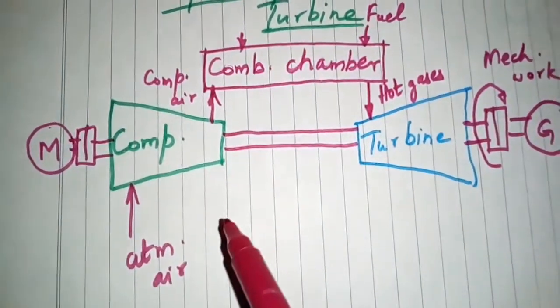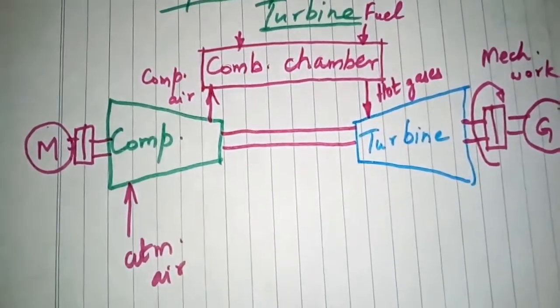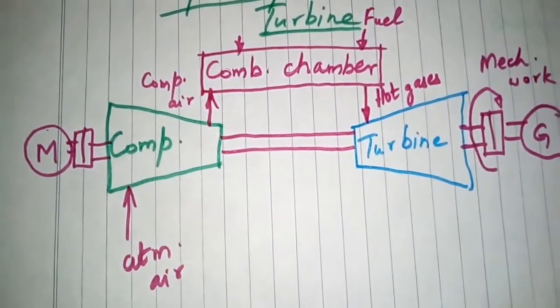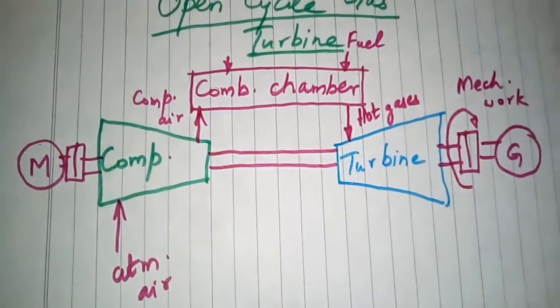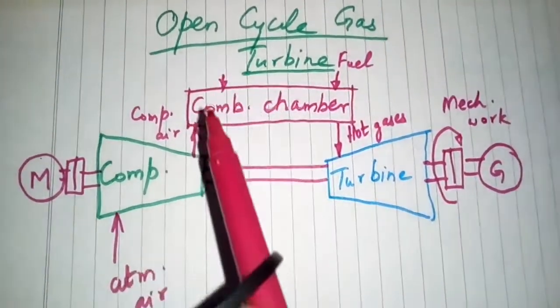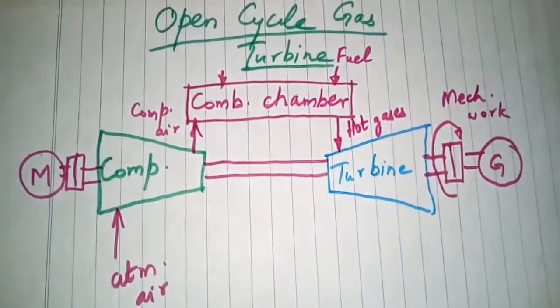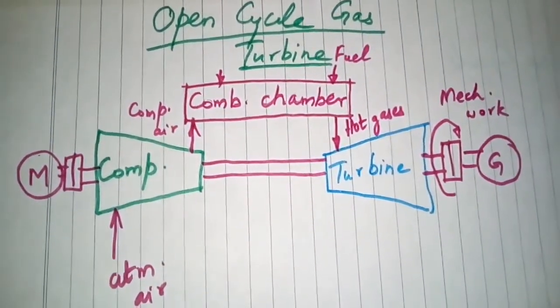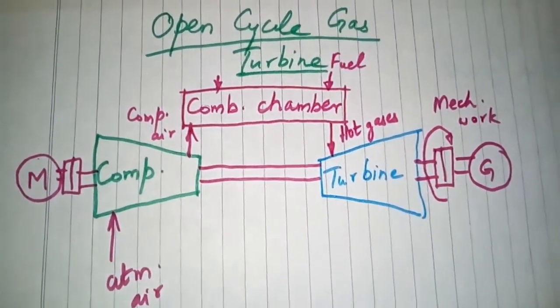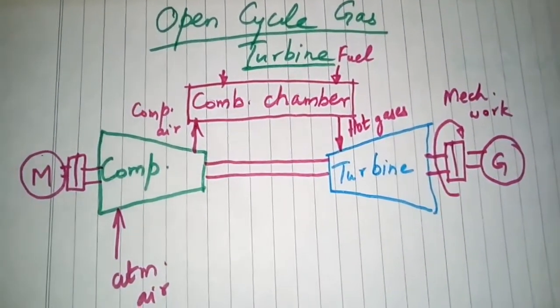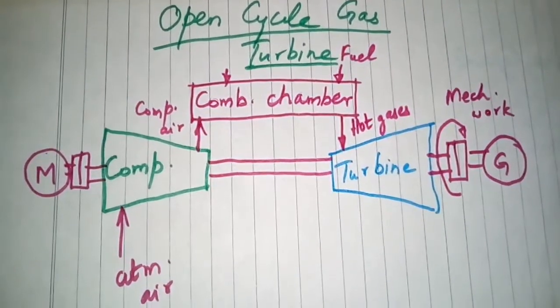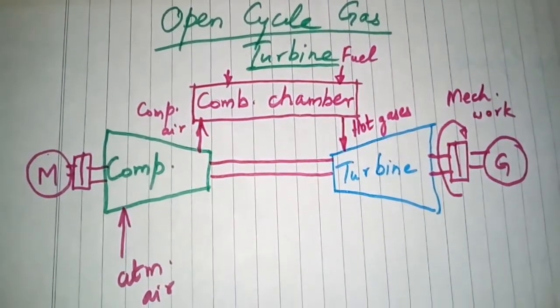The working of the open cycle gas turbine follows a constant pressure process. That was the open cycle gas turbine — hope you liked the video, we will meet again in the next video very soon, till then goodbye.